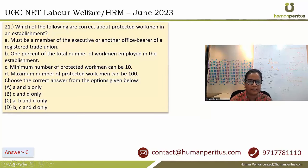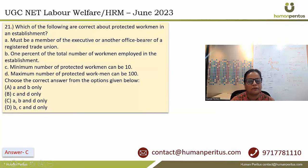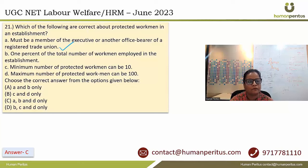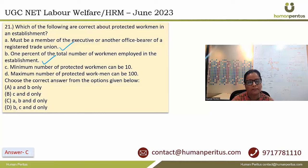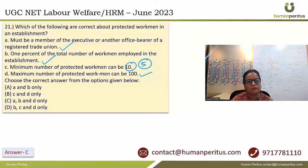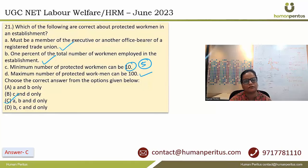Which of the following are correct about protected workmen in an establishment? This is a question from the Industrial Disputes Act. A protected workman must be a member of the executive or an office bearer of a registered trade union — correct. 1% of total workmen must be recognized as protected workmen — correct. The minimum number is not 10 but 5 as per the IDA — so C is incorrect. Maximum number of protected workmen can be 100 — correct. So A, B and D — that is option C is the correct answer.